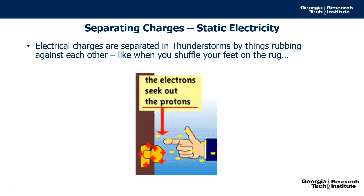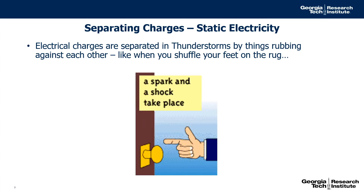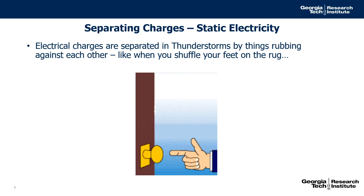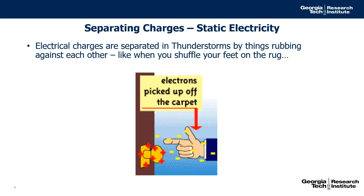As our hand gets close to a doorknob, the negative charge on our hand will attract positive charge on the doorknob. When they're close enough, the opposite charges attract and we get a spark.